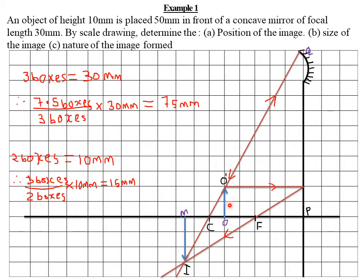For concave mirrors, whenever an image is on the same side as the object, that image is real. Real images are drawn with full lines, while virtual images — formed behind the mirror — are represented with dotted lines. Because this image is real and formed on the same side as the object on a concave mirror, it is represented by full lines. The position of the image is the image distance — the distance of the image measured from the pole.